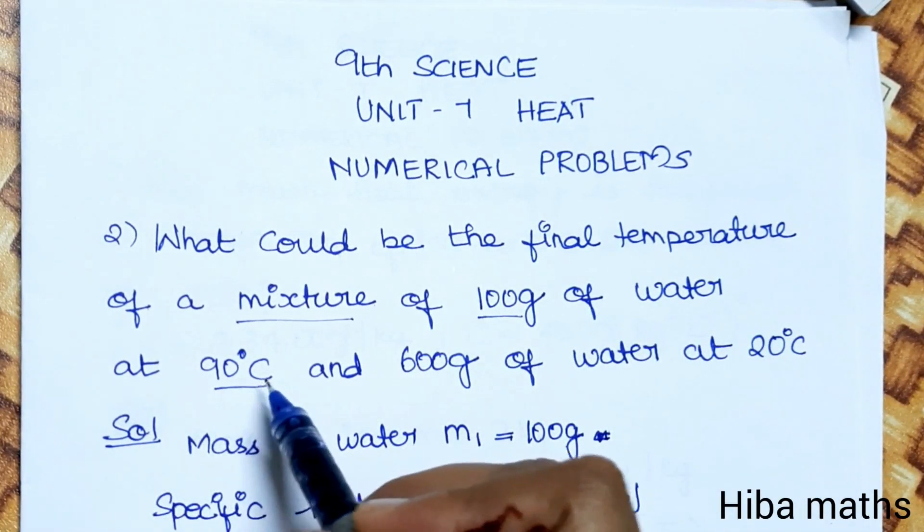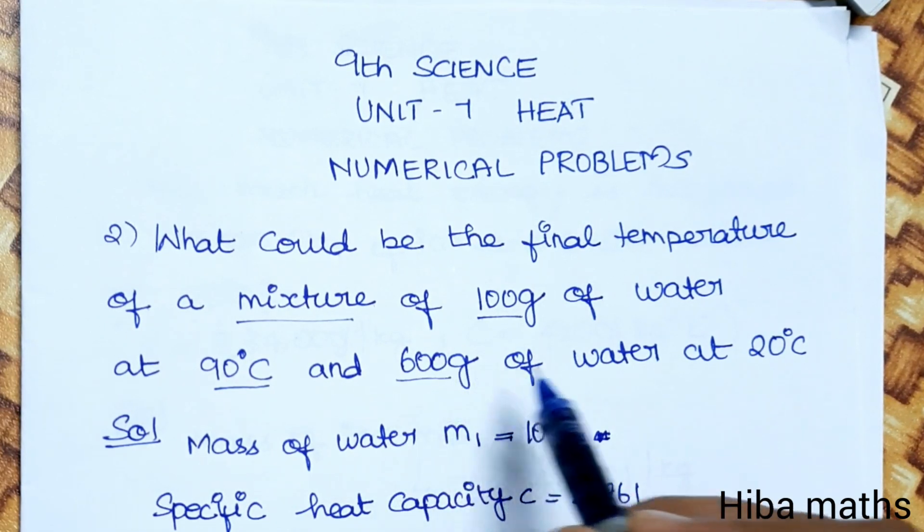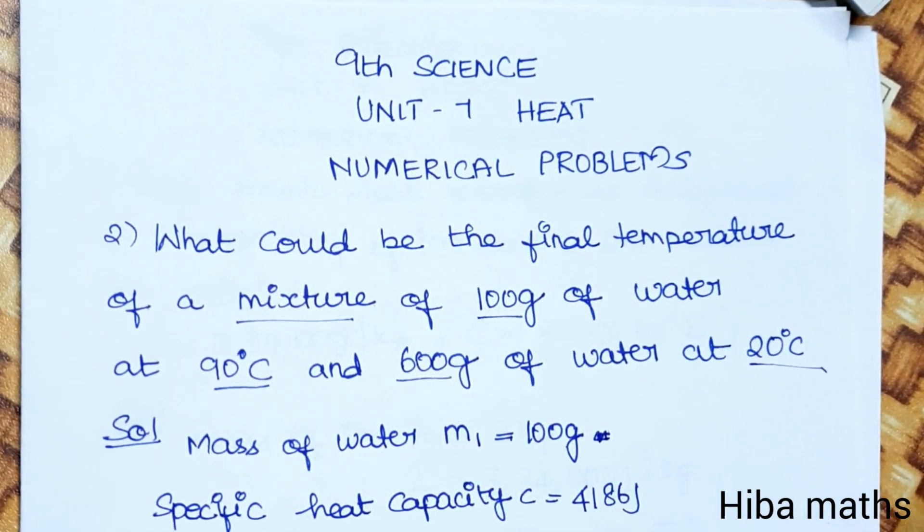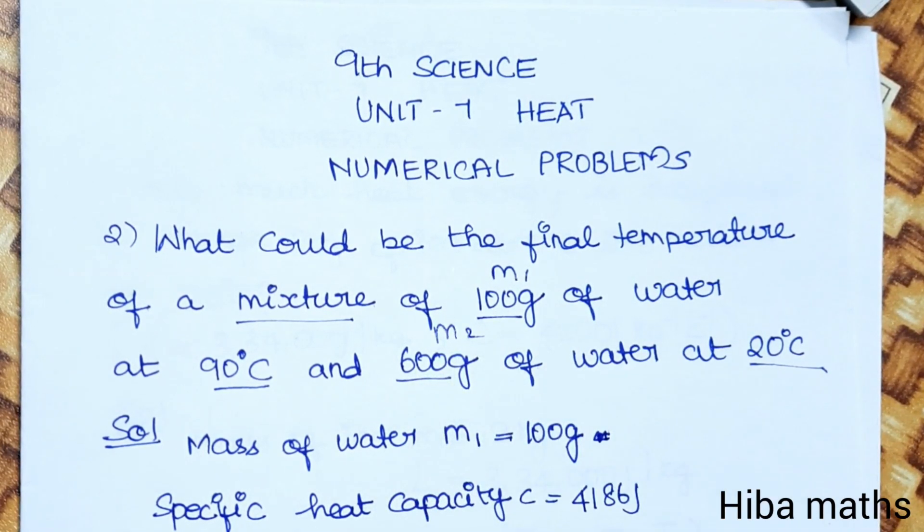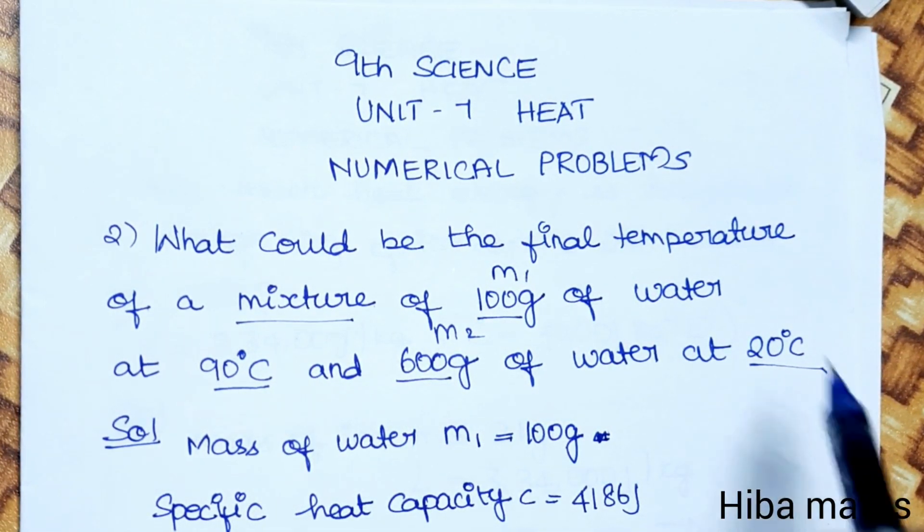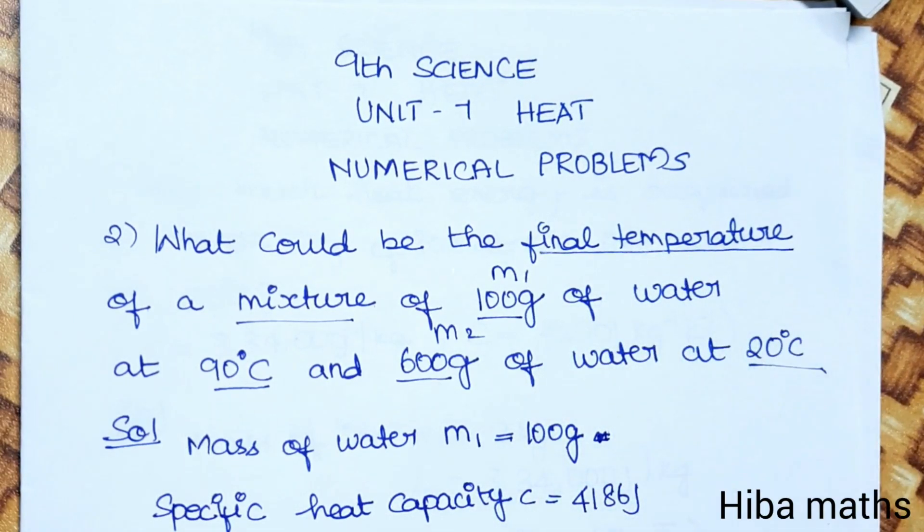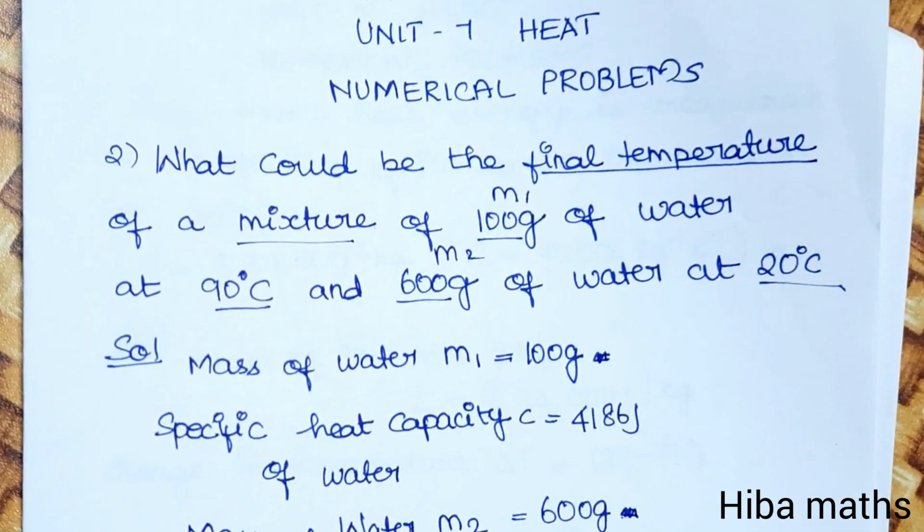So mass 1 is 100 grams, mass 2 is 600 grams, and two temperatures are given. The final temperature is unknown, so T is what we need to find. Given data: temperature values are provided.